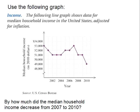The following line graph shows data for median household income in the United States adjusted for inflation. We're going to use this graph to determine by how much the median household income decreased from the year 2007 to the year 2010.